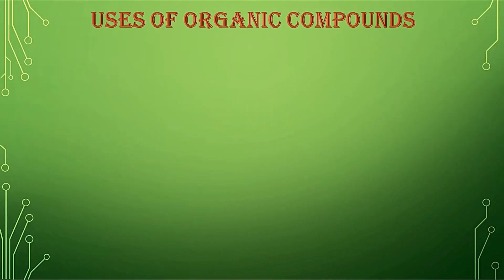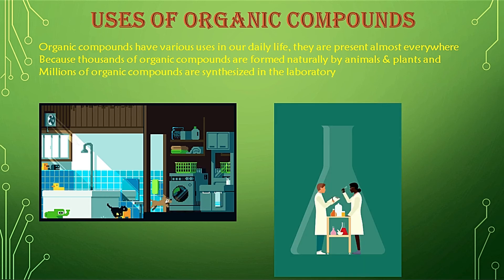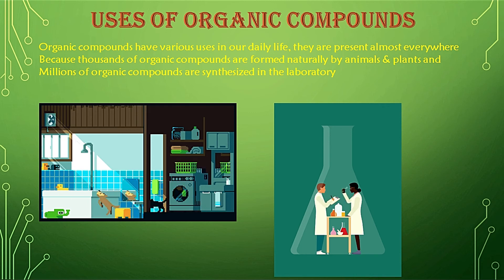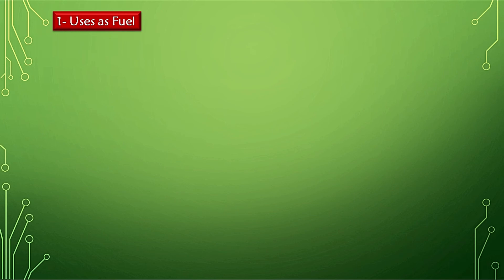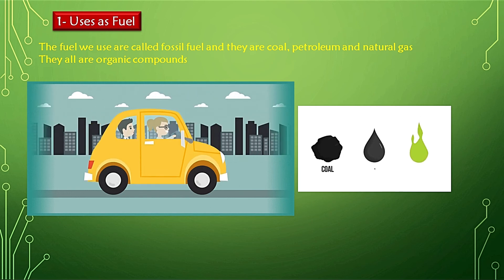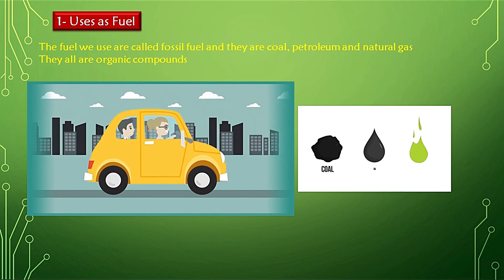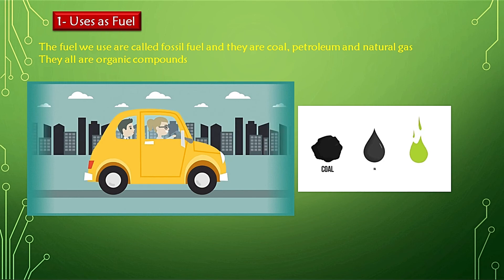Now we are going to discuss some uses of organic compounds. Organic compounds have various uses in our daily lives and are present almost everywhere, as thousands are formed naturally by animals and plants and millions are synthesized in the laboratory every year. For example, the fuels we use are called fossil fuels — coal, petroleum, and natural gas — and all of these are organic compounds.